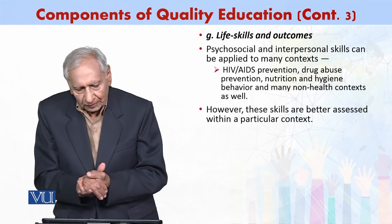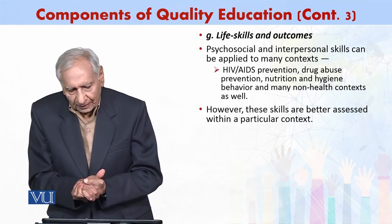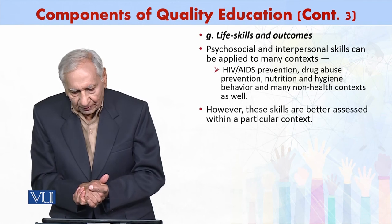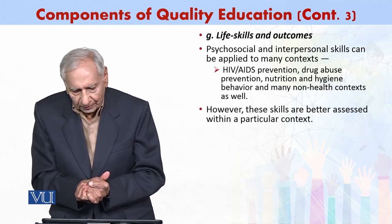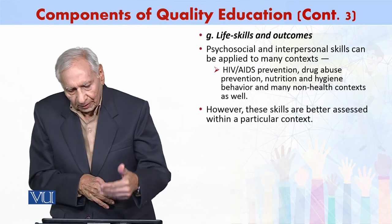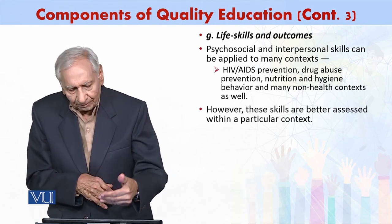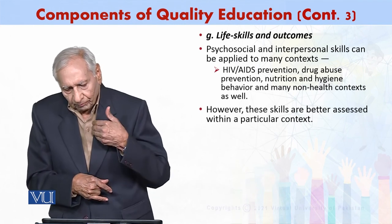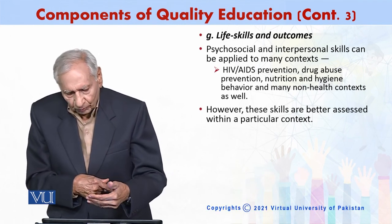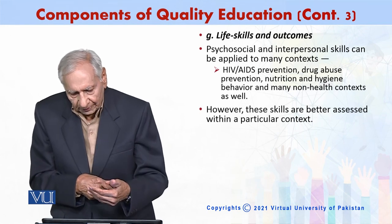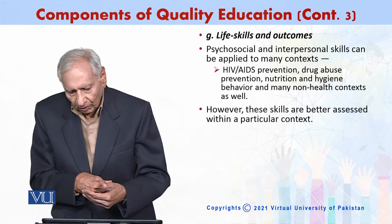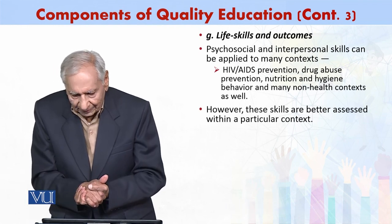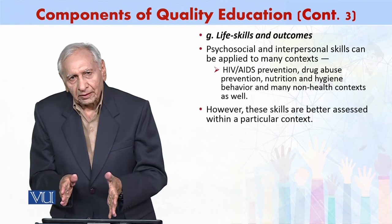Life skills and outcomes are also important. Psychosocial and interpersonal skills can be applied to many contexts, including the prevention of HIV/AIDS, prevention of drug abuse, nutrition and hygiene behavior, and many non-health contexts as well. These skills are better assessed within a particular context.